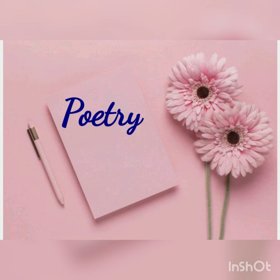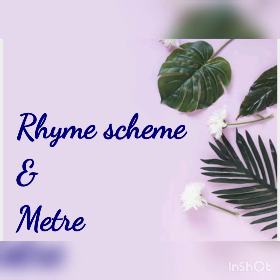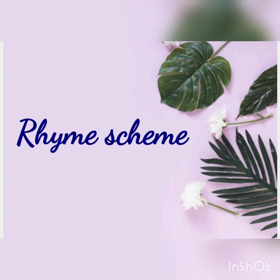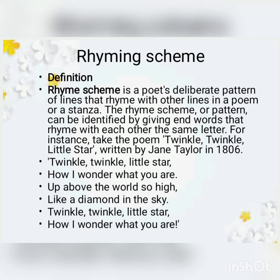Today under the poetry section, we will be learning about rhyming scheme and meter. A rhyming scheme is a poet's deliberate pattern of lines that rhyme with another line in a poem or stanza. The rhyme scheme can be identified by giving end words that rhyme with each other the same letter. For instance, take the poem 'Twinkle Twinkle Little Star' written by Jane Taylor in 1806. Let's see the rhyming scheme of this poem.